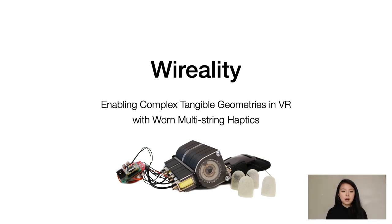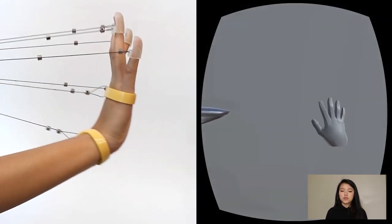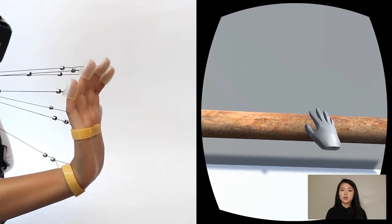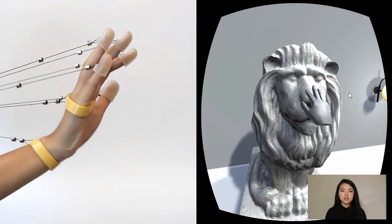That enables complex haptic interactions such as touching planar and curved surfaces, the wrapping of fingers around virtual railings and poles, as well as touching irregular objects and surfaces.